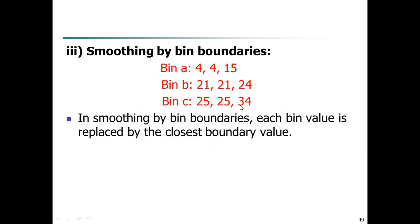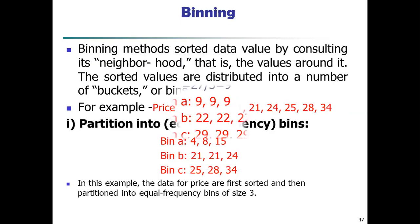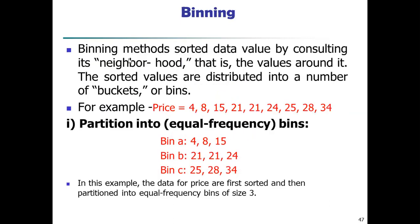Smoothing by bin median: the median is the middle-most number. For bin A with three numbers, the middle number is 8 — replace all values with 8. Output: 8, 8, 8. For bin B, the median is 21 — output: 21, 21, 21. For bin C, the median is 28 — output: 28, 28, 28. If there are only two values remaining, we take the mean of those two values.